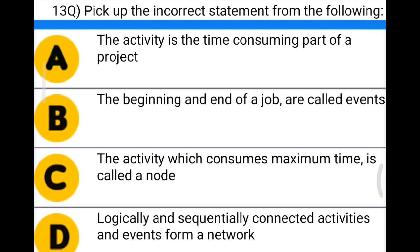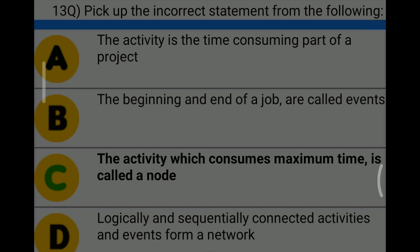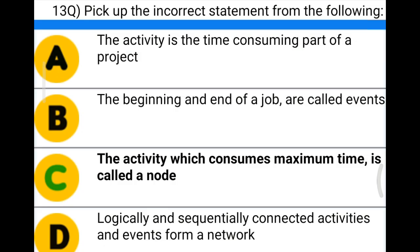Next question: pick up the incorrect statement from the following — Option A: the activity is the time-consuming part of the project, Option B: the beginning and end of the job are called events, Option C: the activity which consumes maximum time is called node, Option D: logically and sequentially connected activities and events form a network. The correct answer is Option C — the activity which consumes maximum time is called node is incorrect.